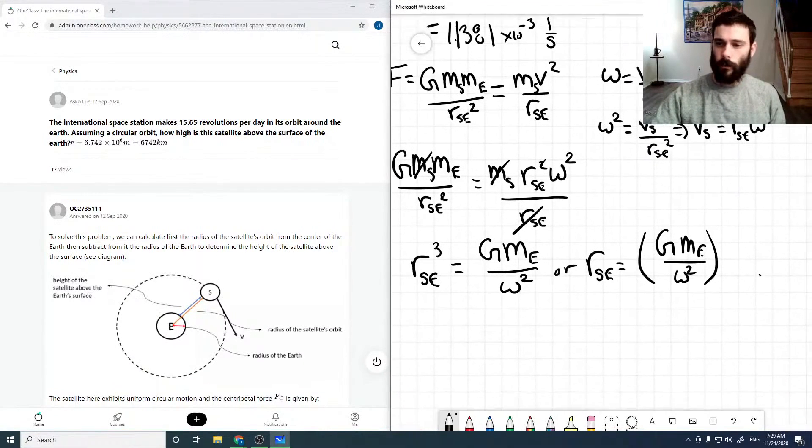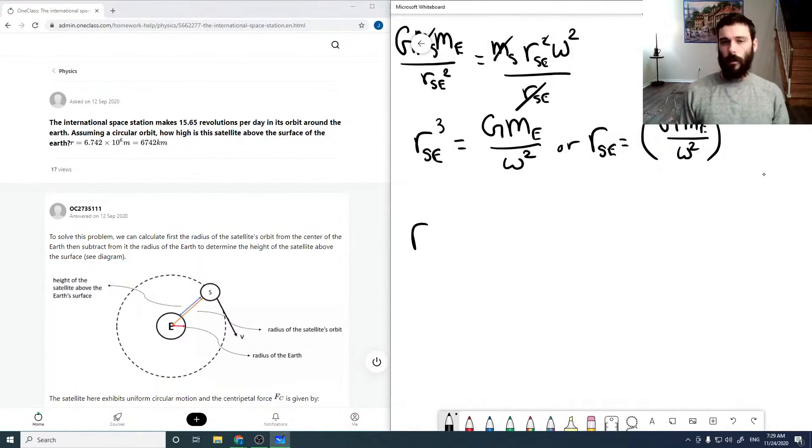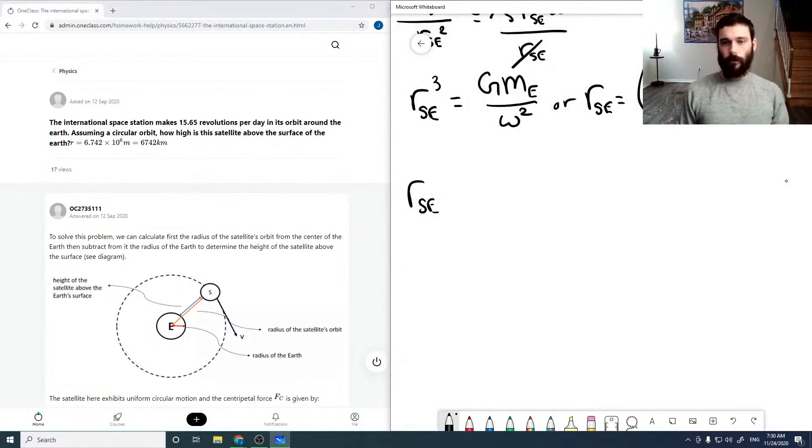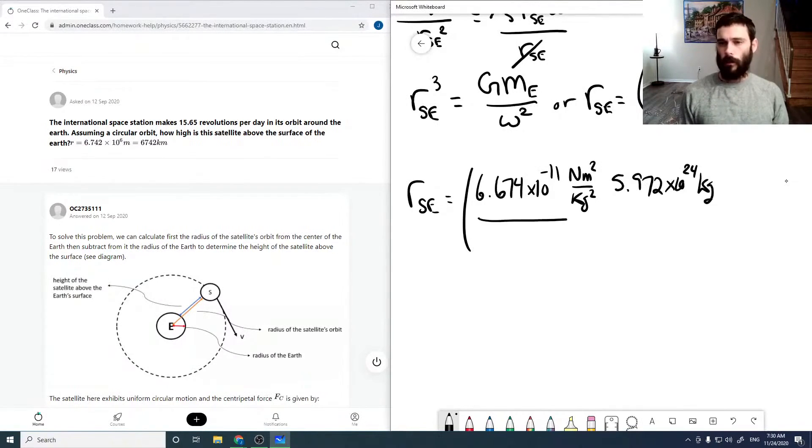Plugging in our values, so this radius, sorry, one-third. So that should have been one-third in there, not just that. So plugging in our values, so for G, we use 6.674 times 10 to the minus 11 newtons meters squared per kilogram squared. For the mass of the Earth, we're using 5.972 times 10 to the 24 kilograms. And omega was just computed as 1.1381 times 10 to the minus 3 per second. And that's squared, and the whole thing's to the power of one-third.